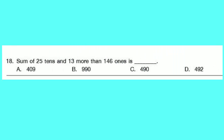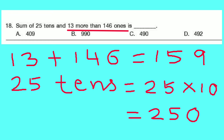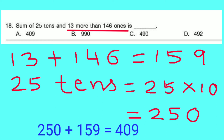Question number 18: The sum of 25 tens and 13 more than 146 ones is dash. 13 plus 146 equals 159, so 13 more than 146 equals 159. 25 tens equals 250. Adding both: 250 plus 159 equals 409. Option A is correct.